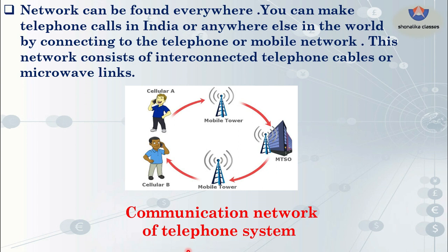Again, what is the meaning of interconnected? Interconnected means that resources, systems, and devices are not directly connected — there are multiple paths. Cellular A and cellular B each connect to their nearest mobile network, and through those networks they communicate with each other. This is called the communication network of the telephone system.